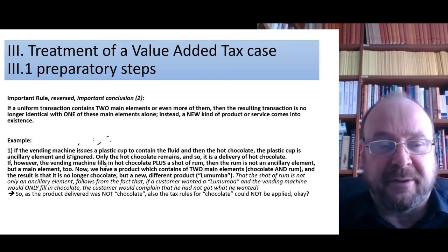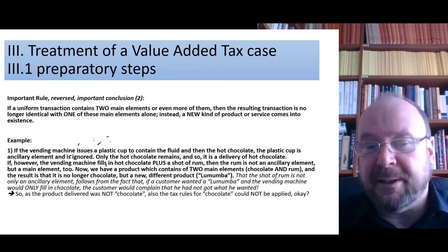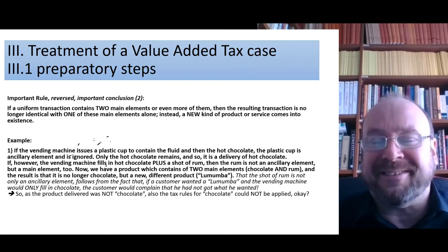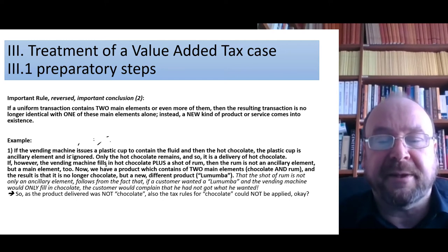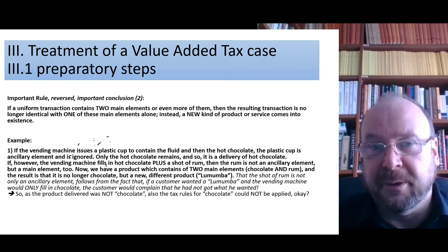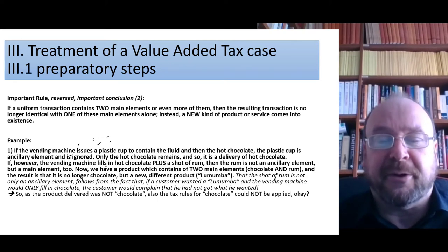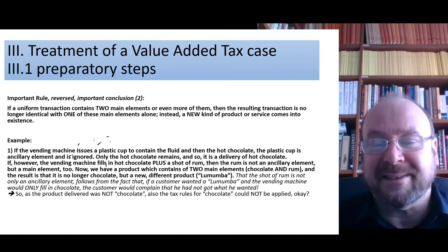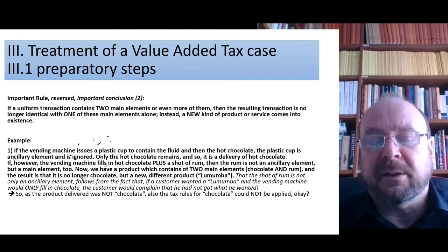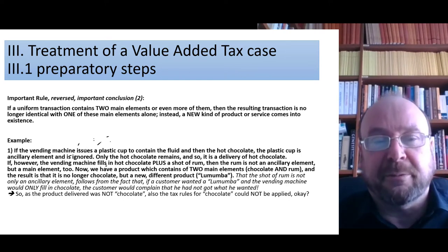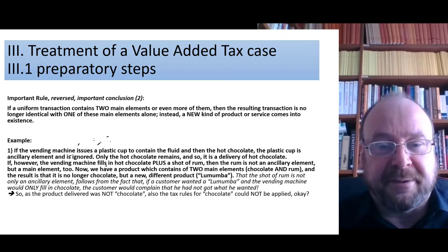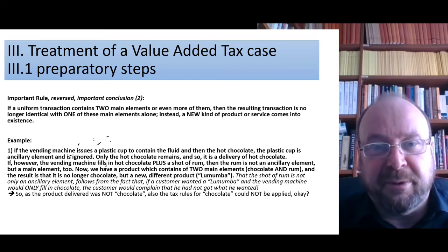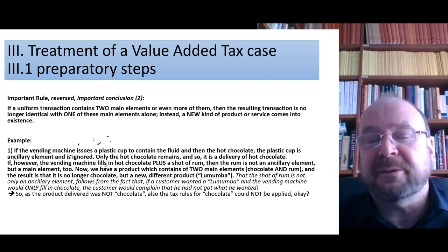If you change it so that the vending machine fills in hot chocolate plus a shot of rum, and the rum is not an ancillary element but a main element too, then the drink you get is no longer chocolate — it has been changed. Imagine someone wants to buy chocolate with rum inside — in German slang called Lumumba. If only chocolate were delivered, you would be angry: this is not what you ordered. So something different has been produced, and you will not be able to apply the tax rate for hot chocolate to that new, different product — although chocolate was one raw material used to produce it.